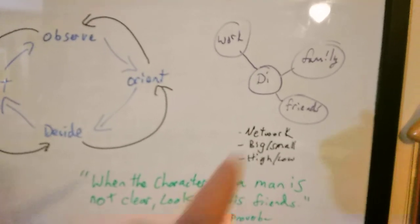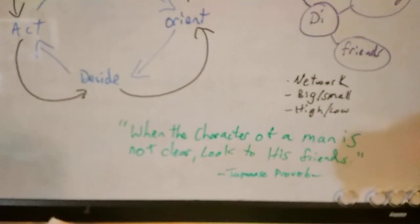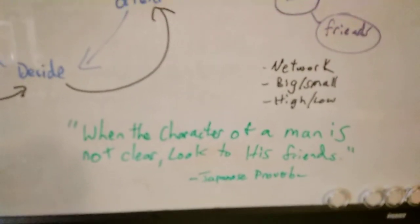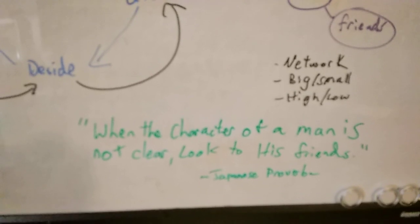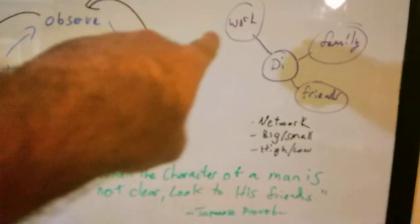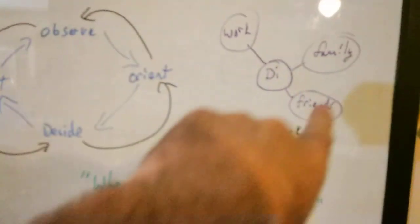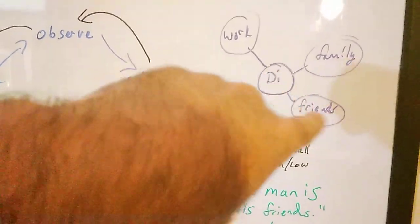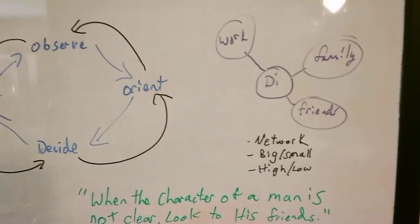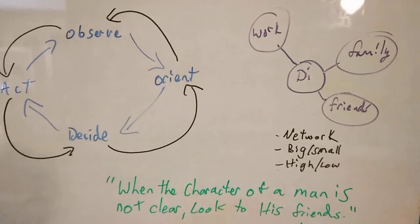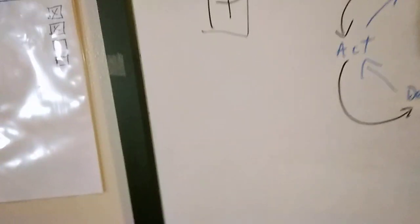So then this reminded me of a Japanese proverb I read a long time ago. When the character of a man is not clear, look to his friends. So it's like you can tell who somebody is maybe by their actions, by who they hang out with, what kind of people do they hang out with, what kind of people do they tolerate. Is it a good thing, a bad thing. I thought that was very interesting.